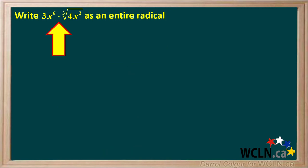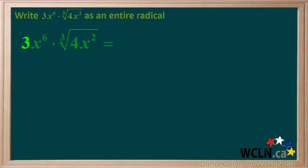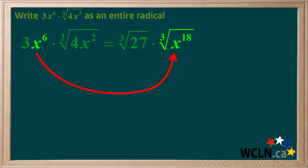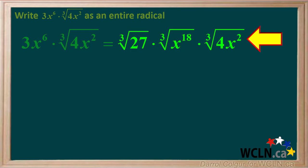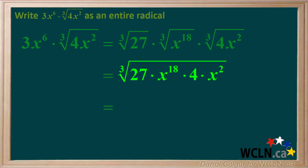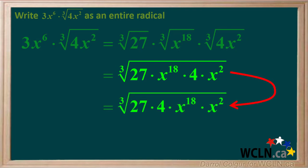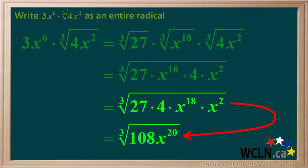We can also convert mixed radicals with cube roots to entire radicals. Here we're asked to write 3x to the 6th times the cube root of 4x squared as an entire radical. 3 can be written as the cube root of 27. x to the 6th can be written as the cube root of x to the 18th. The cube root of 4x squared is already a radical, so it can be written here as is. Now we're left with the product of these cube roots, and we'll combine them into a single cube root, grouping the numbers together and the variables together. Multiplying everything under the radical sign gives us 108x to the 20th.